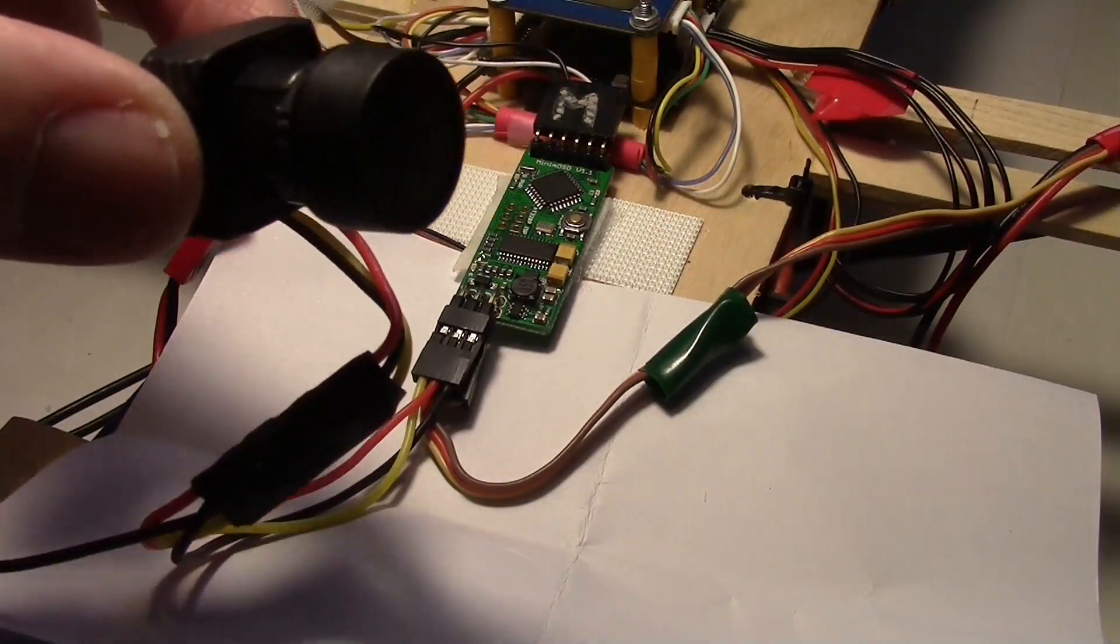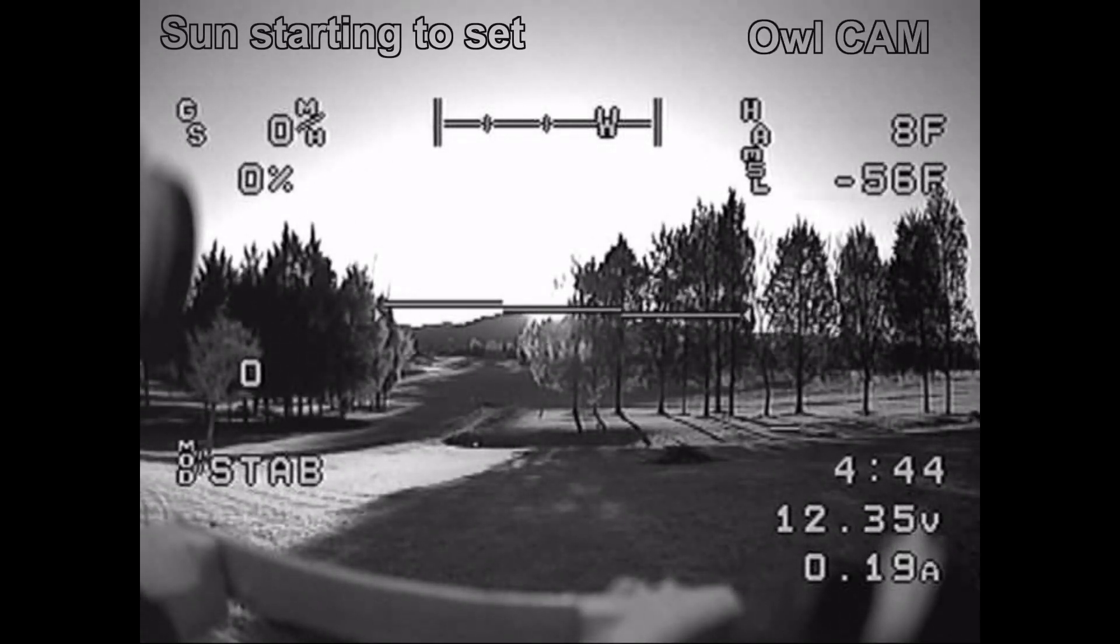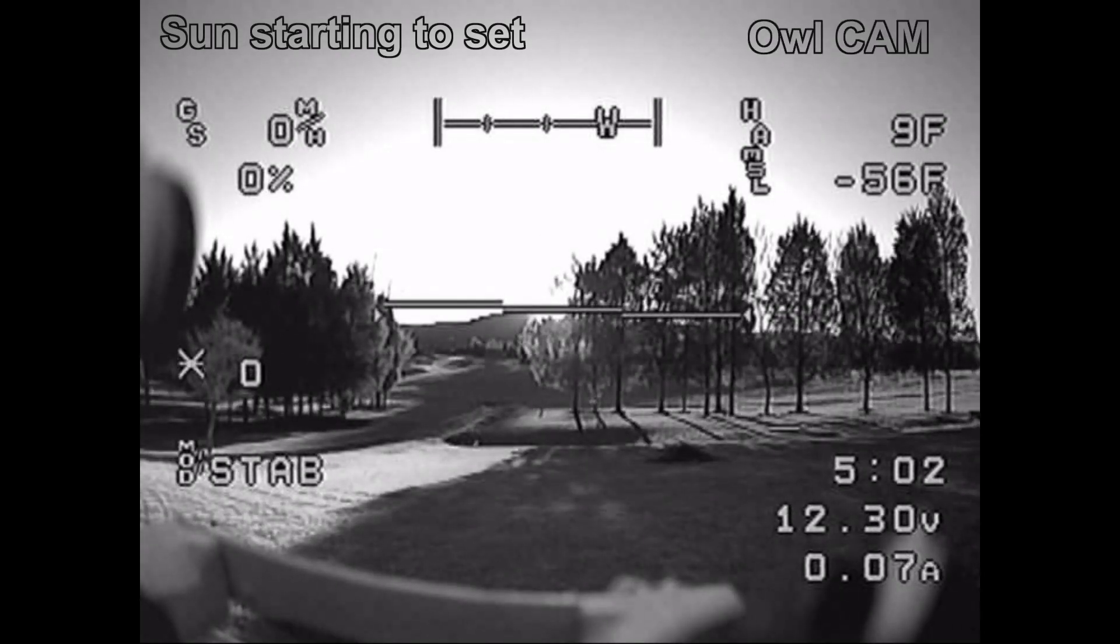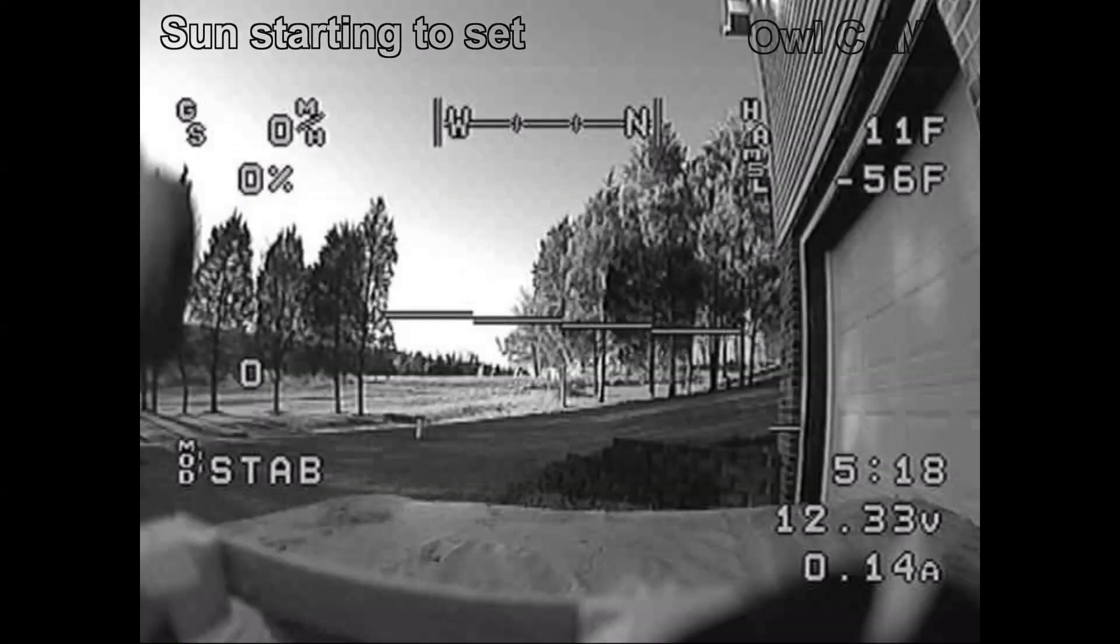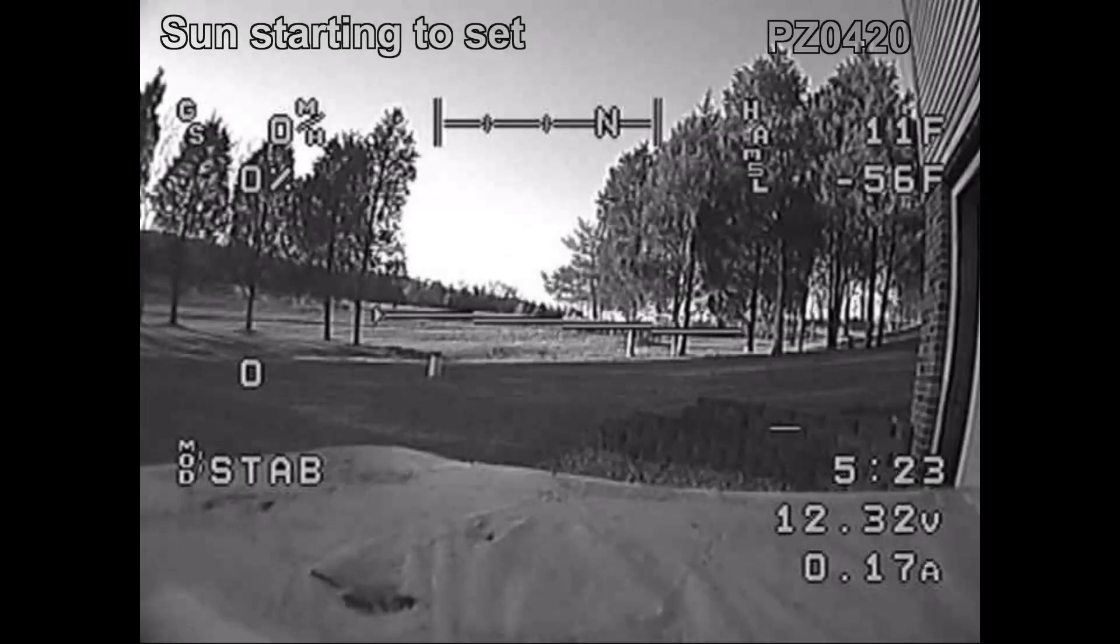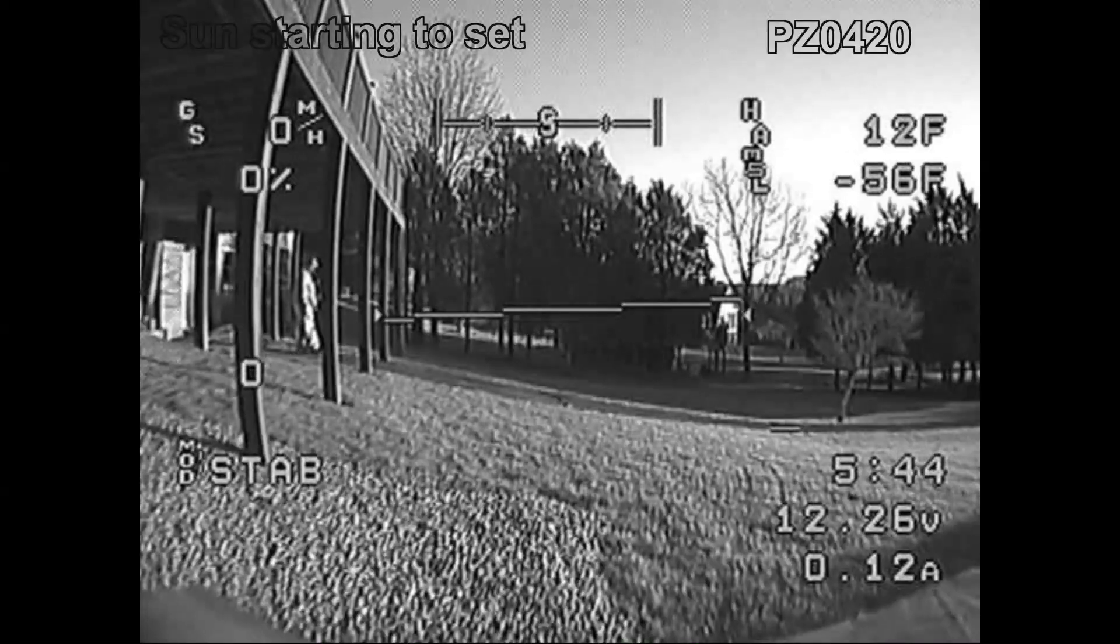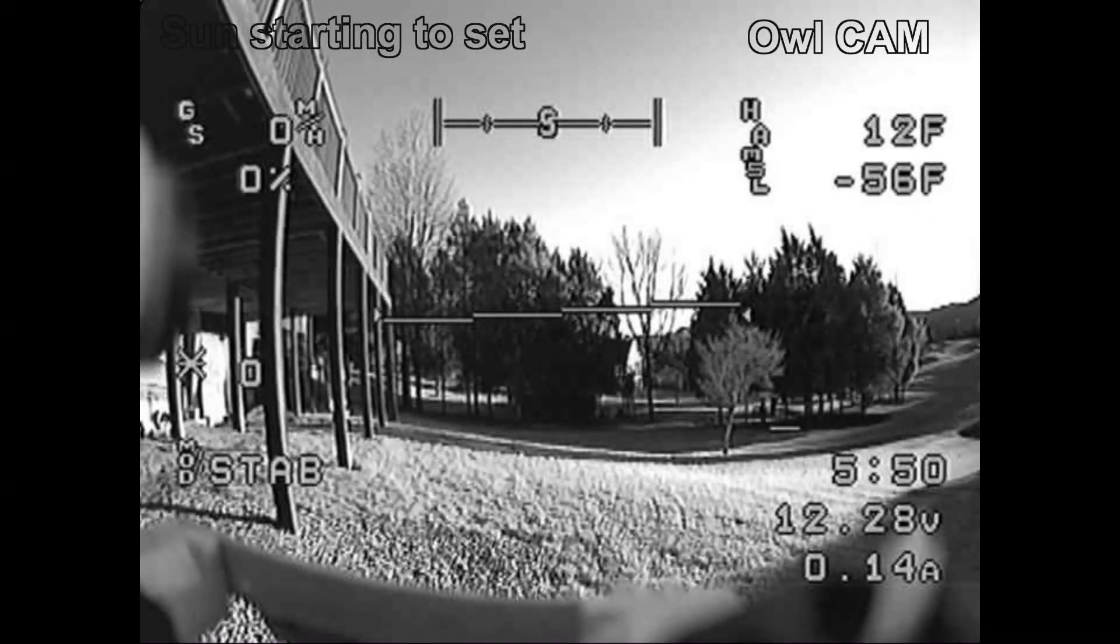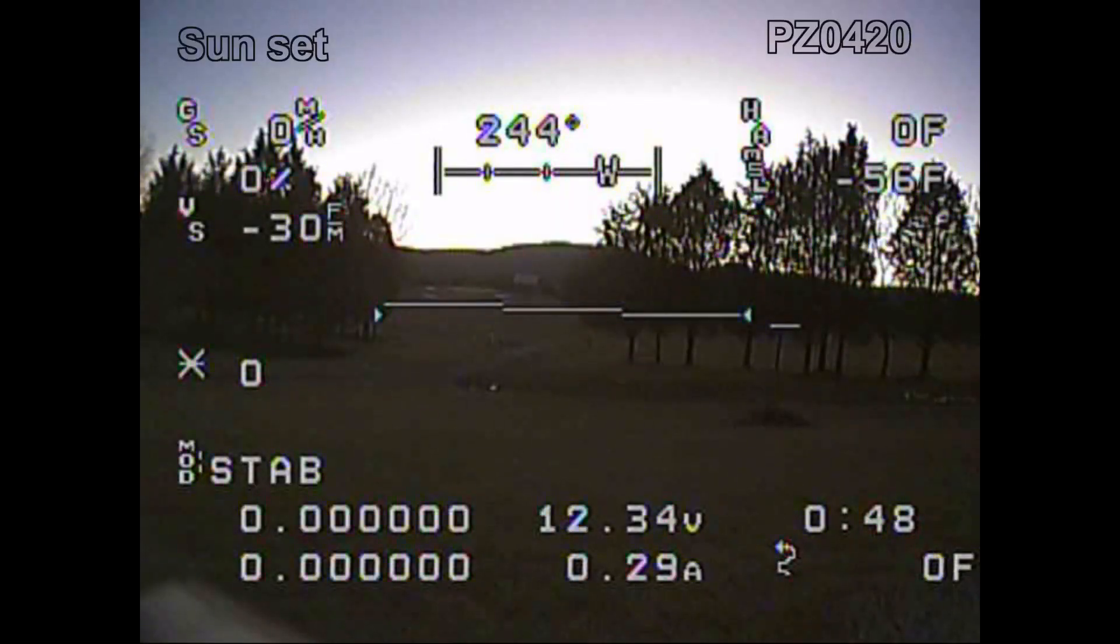Here's a comparison of the PZ0420 to the OWL camera in different lighting conditions. We're at sunset—the sun is starting to set behind the hill. You can see the PZ0420 is kind of washed out compared to the OWL, but still certainly usable. The OWL doesn't have any adjustments or menus. You can adjust the PZ0420, so perhaps it could be adjusted better, but I think I've got the PZ about right.